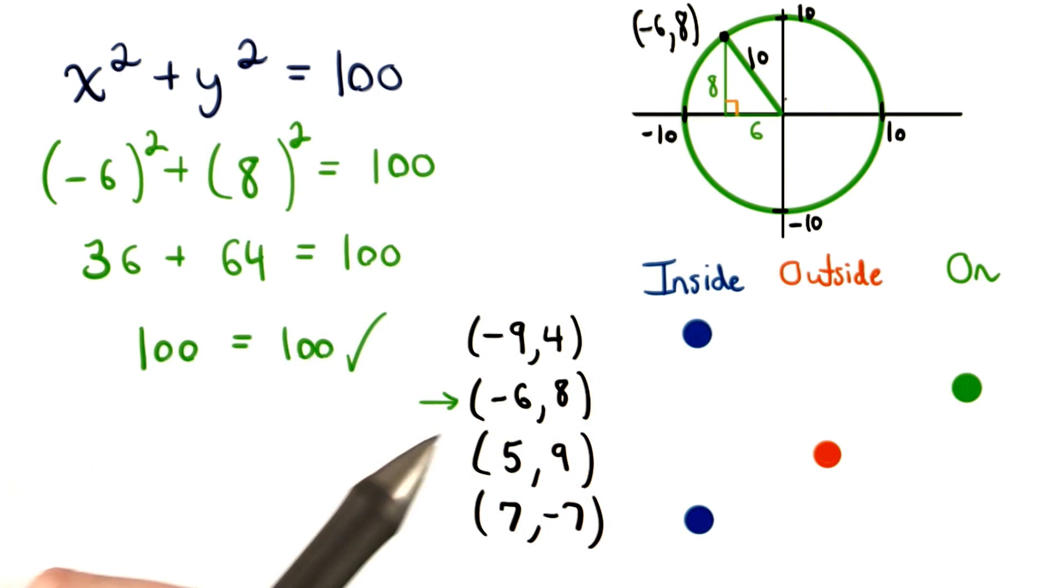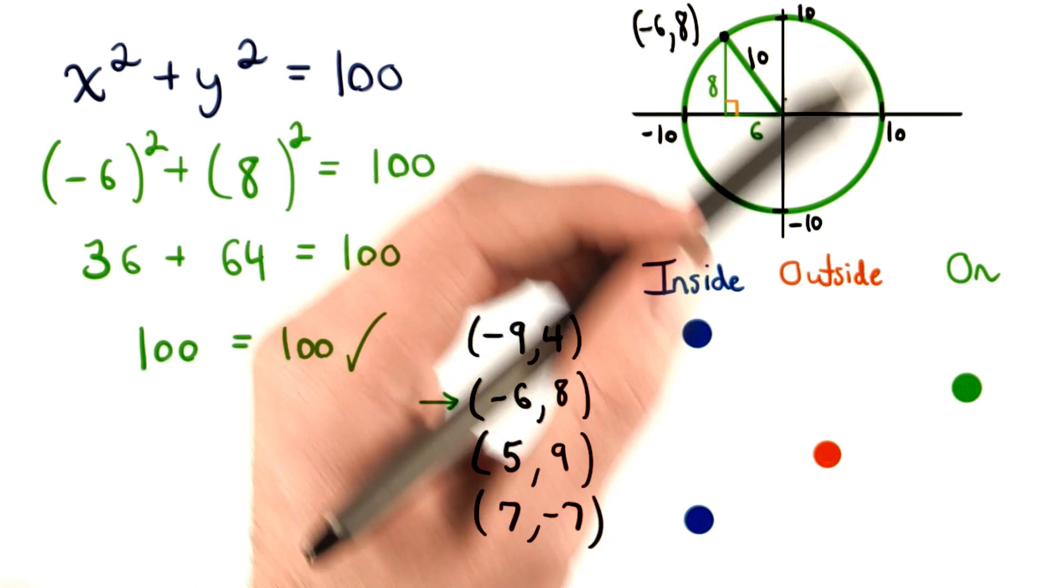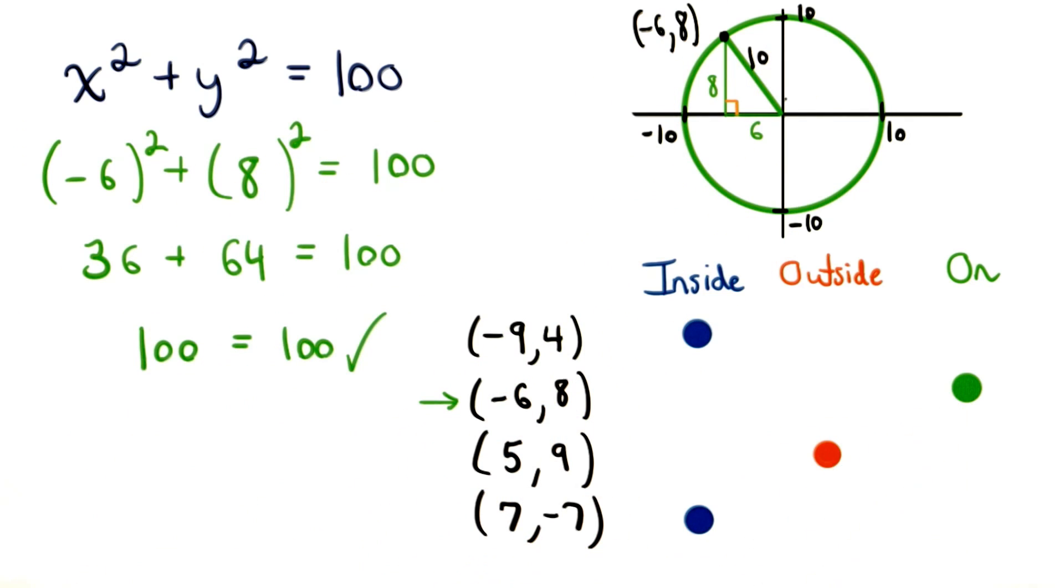So, by checking the point in our calculations or by drawing out a diagram, we can know that this point is definitely on our circle.